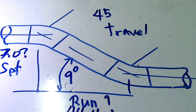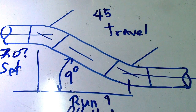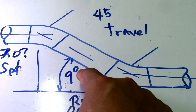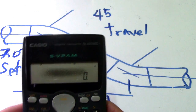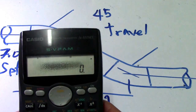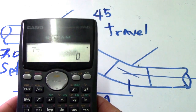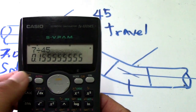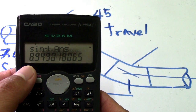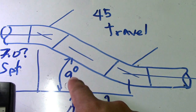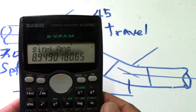Now we will check if our answer is correct. We will verify to find the 9 degrees back. Divide the set by the travel: 7 divided by 45, then press shift and sine (inverse sine). The result is 8.9, which we round to 9 degrees. So our answer is correct.